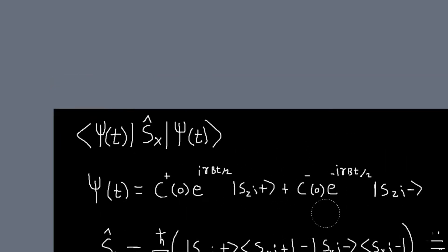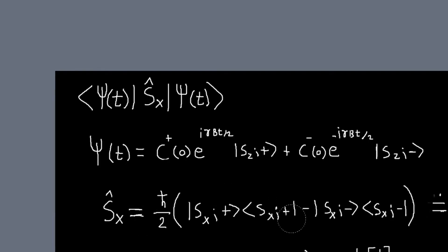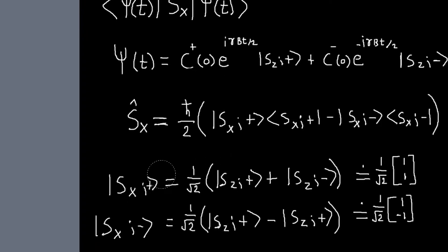And so what we have now is our kets expressed in one basis, and our operator expressed in a different basis. So what we need to do is either we could convert these kets to this basis, or we can convert this operator to the Sz basis. I'm going to convert this operator to the outer products of our Sz kets. And the way to do that is, we found before that our Sx plus and Sx minus states can be written as a linear superposition of these spin z states.